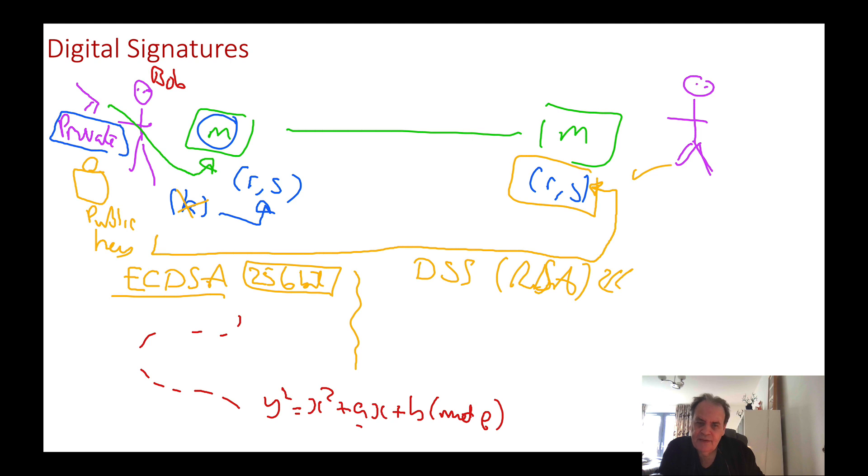We specify our elliptic curve with an A value, a B value, and a P value. We also define N, the order, which is the total number of points on the curve. In continuous form, it looks like a graph, but with discrete points using mod P, we end up with scattered points.